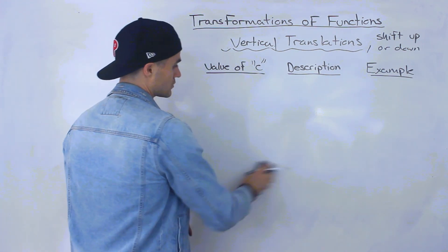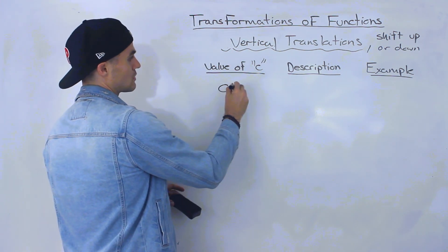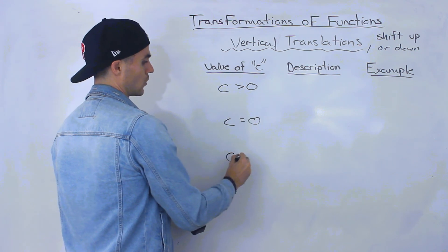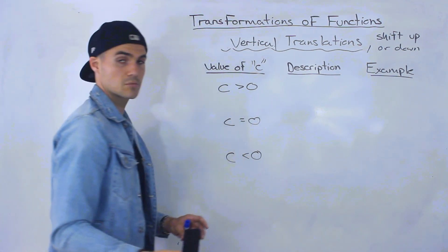And very similar to the D value, the C value is going to have three cases. Either the C value is going to be positive, either it's going to equal zero, or it's going to be negative. It's going to be less than zero.